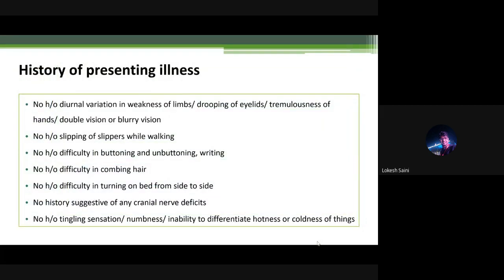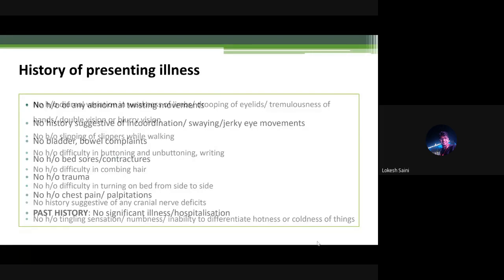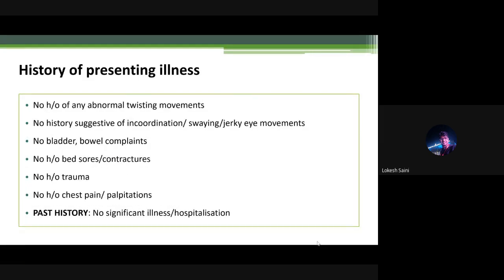History of presenting illness: No history of diurnal variation in weakness, no drooping of eyelids, tremulousness of hands, double vision, or blurry vision. No history of slipping of slippers while walking, difficulty in buttoning, writing, combing hair, or turning on bed side to side. No history of cranial nerve deficits, tingling, numbness, inability to differentiate hot or cold. No history of abnormal twisting movements, dystonia, extrapyramidal movements, incoordination, jerky eye movements, bladder-bowel issues, bed sores, contractures, trauma, chest pain, or palpitations.